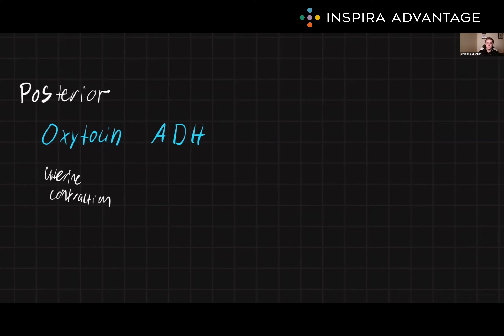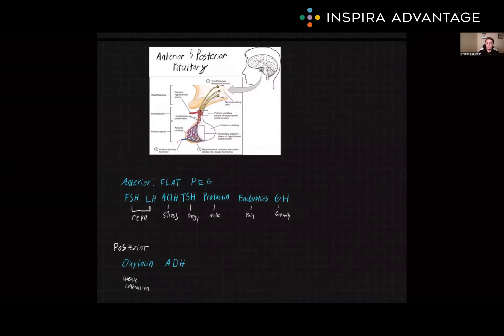It's important to note that these hormones are produced by the hypothalamus but are released by the posterior pituitary gland. The hypothalamus and the pituitary gland are closely linked and work together to regulate various physiological processes. Understanding the functions and interactions of these hormones is crucial for the MCAT and for understanding human physiology. Thanks for watching — I'll see you next time.